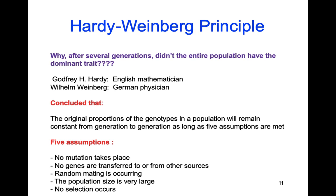Hardy and Weinberg, two scientists, asked: if there are definitely traits that are more advantageous than others, why after several generations didn't an entire population all have the dominant trait? Why didn't everybody have brown eyes or attached earlobes? What they figured out was the original proportions of genotypes in a population will only remain constant if five specific things happen.